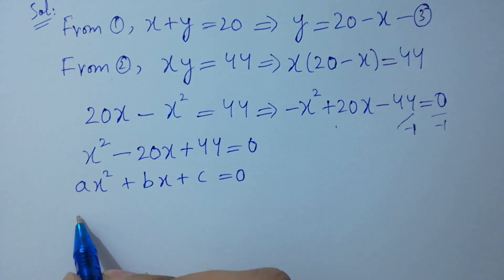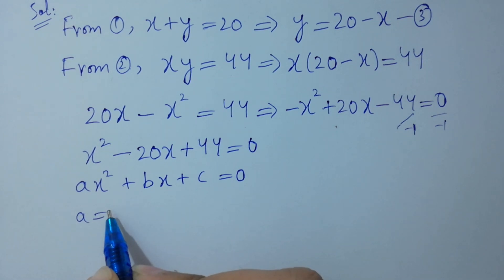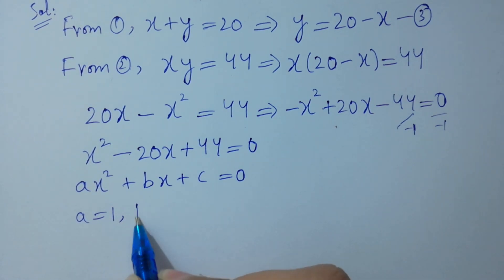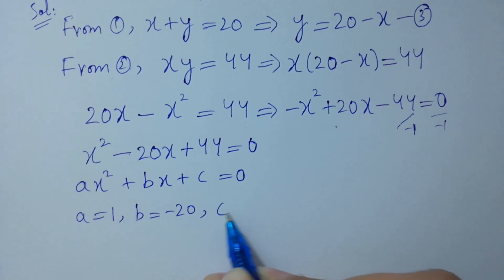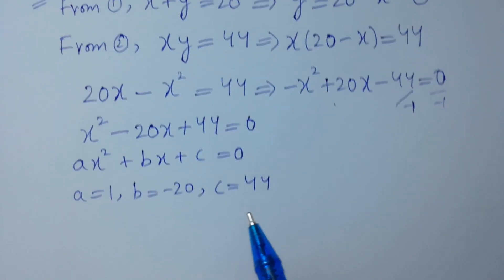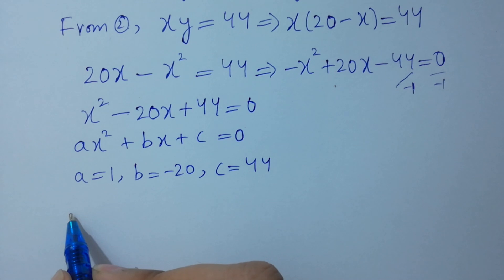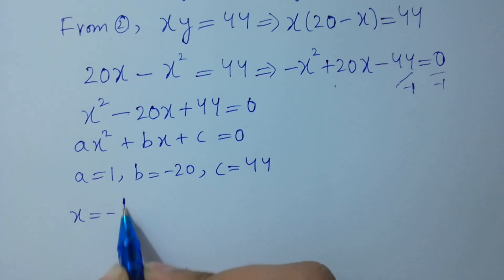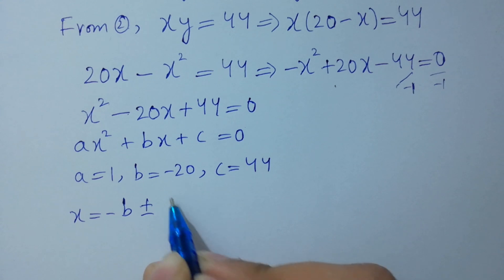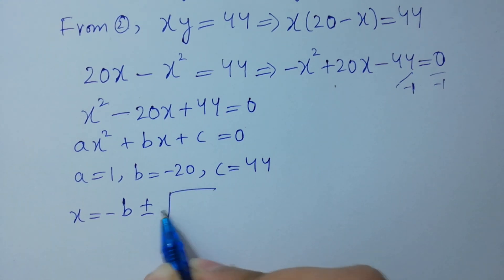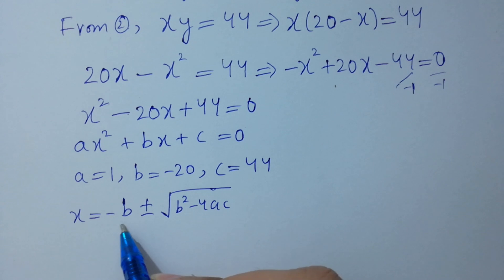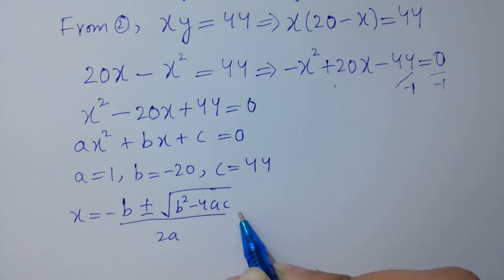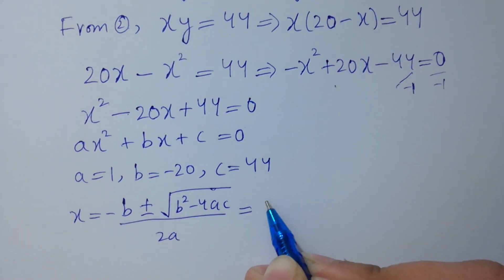Comparing, we have a equal to 1, b equal to minus 20, c equal to 44. Apply the quadratic formula: x equal to minus b plus or minus square root of b squared minus 4ac, over 2a. Put the values in.